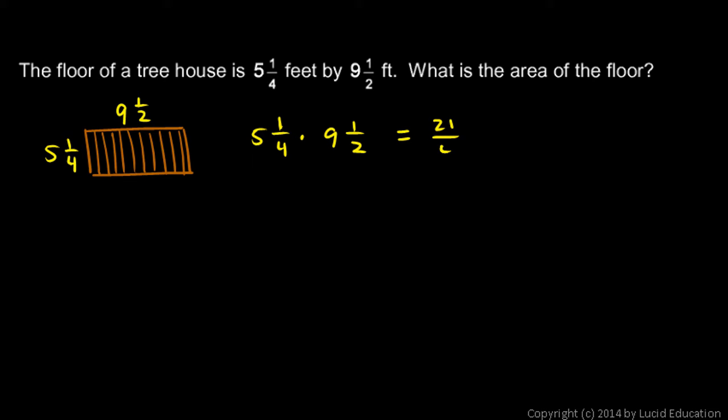the 9 and 1 half. Let's rewrite that. I'll do 9 times 2 is 18, plus 1 is 19. So this is 19 halves. So 5 and 1 quarter times 9 and 1 half is the same thing as 21 fourths times 19 halves.